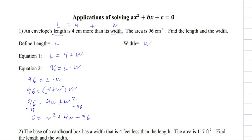Let's rewrite this in descending order. So W squared plus 4W minus 96. And there we go. So now we're going to factor it. So 96 would be plus 12 and minus 8. And then we set them equal to 0.